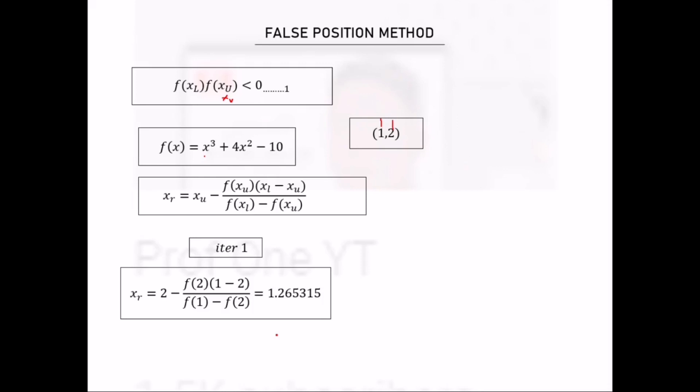Take note of the significant figures and decimal places specified in the question. We now have our three points: 1, 1.26315, and 2. From there, we check the condition to determine in which interval the root lies.